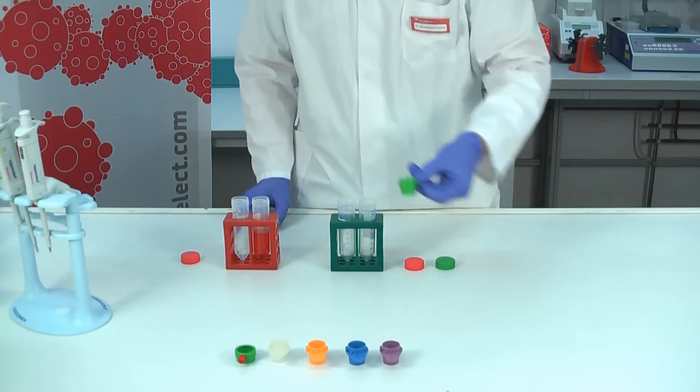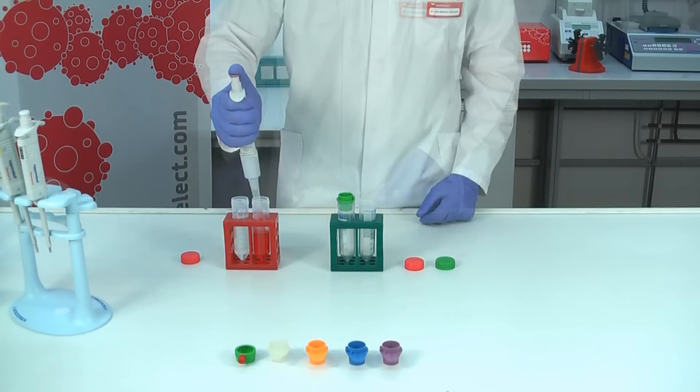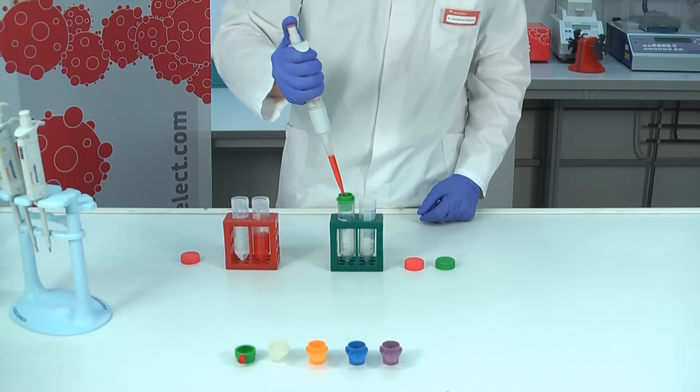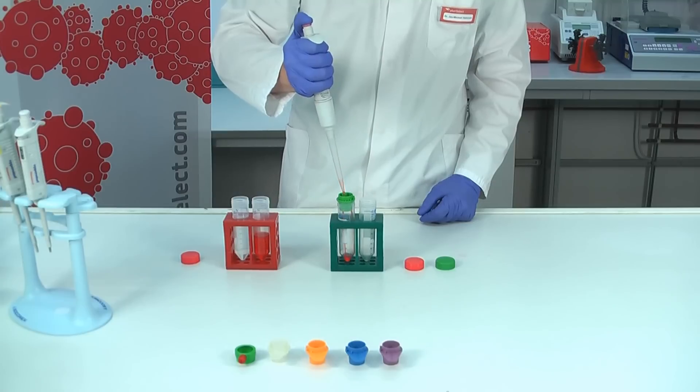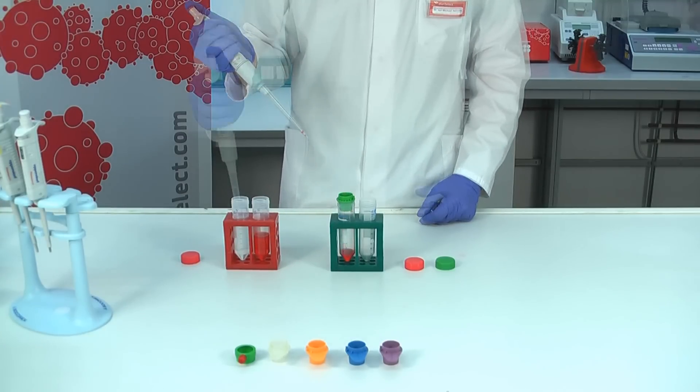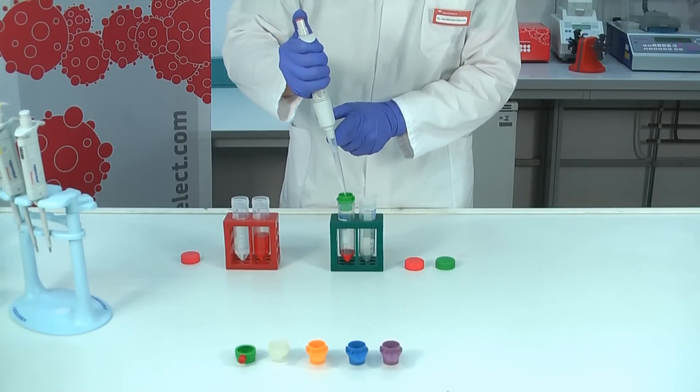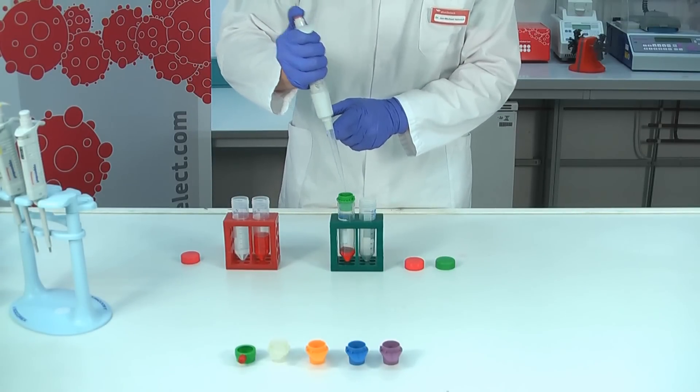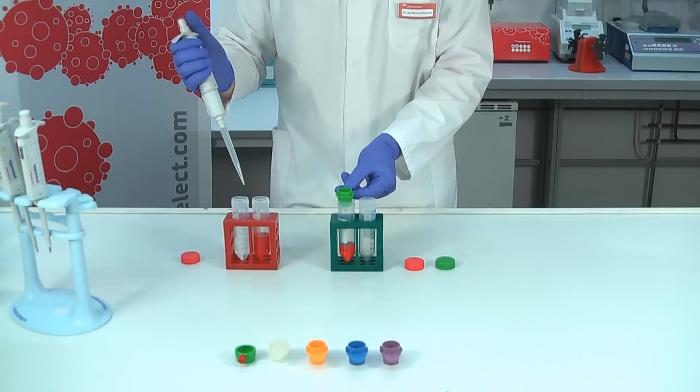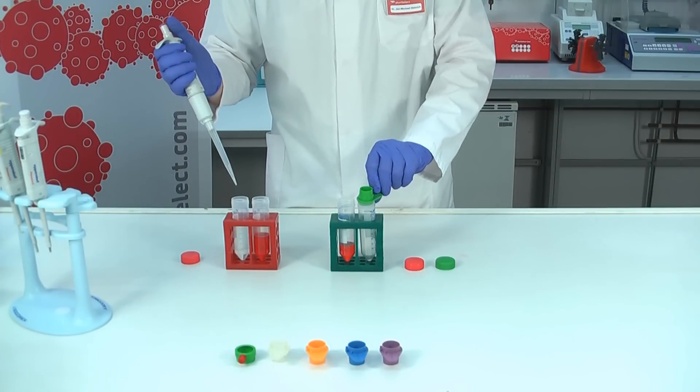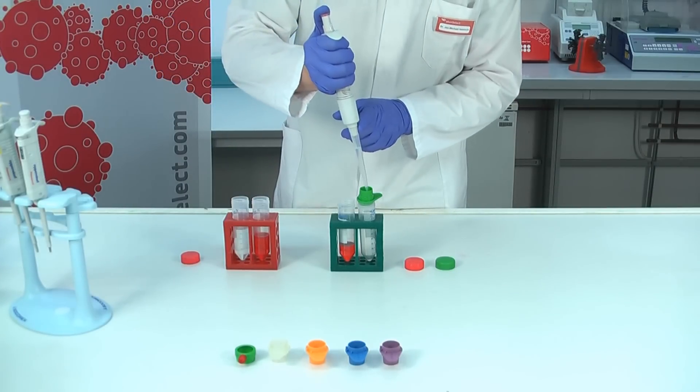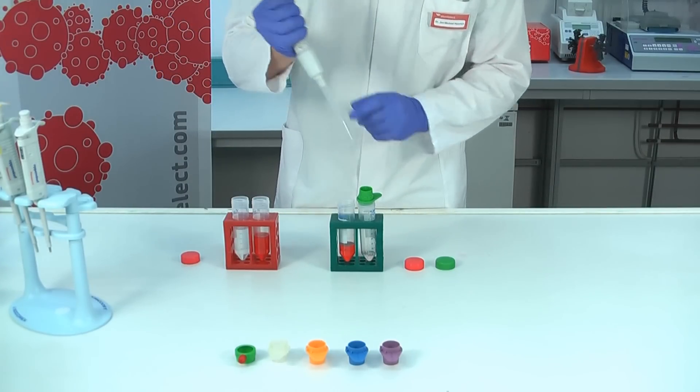Plug the pluriStrainer on a 50ml tube. Add your sample material and then wash with buffer. Now you can take off the pluriStrainer and turn it upside down on another fresh tube. Add some washing buffer, and your strained cells will run into the tube.